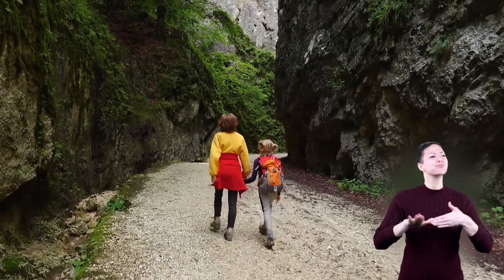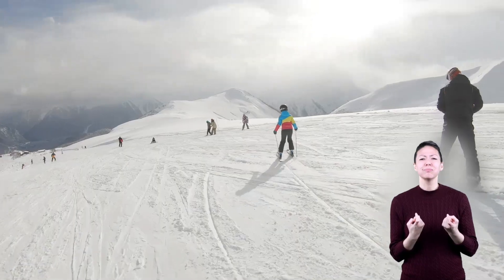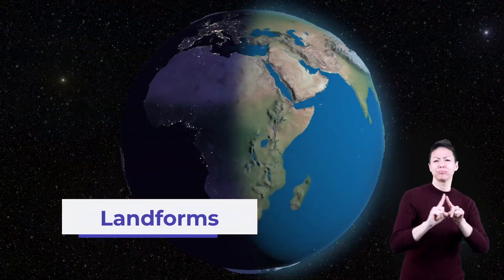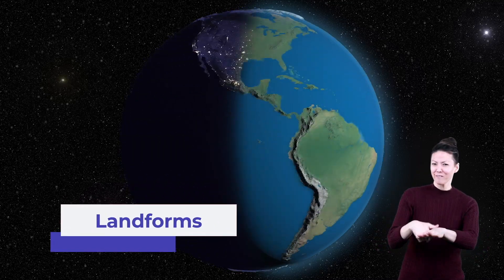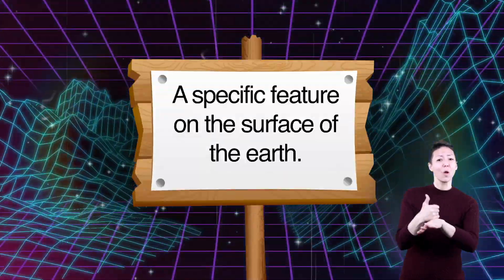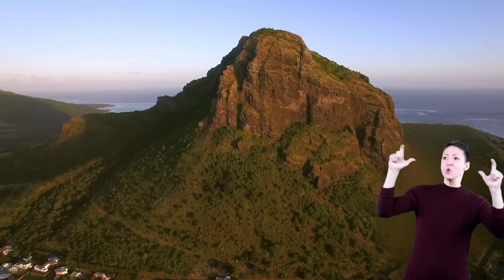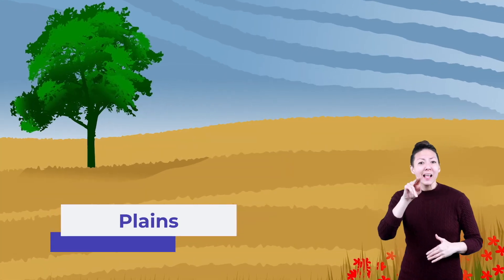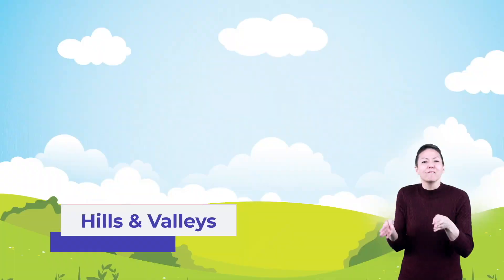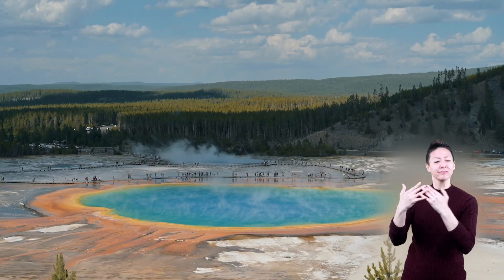Have you ever gone hiking in a canyon? Or maybe you've skied down a snowy mountain? You may live in a valley without a hill for miles. Earth has all kinds of features like these called landforms. A landform is a specific feature on the surface of the Earth, ranging from huge things like plains, plateaus, and mountains, to smaller stuff like hills and valleys.